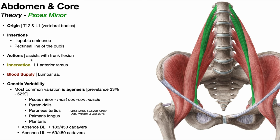The psoas minor assists with trunk flexion. The prime mover of trunk flexion is the rectus abdominis, which we discussed when covering the muscles of the anterior abdominal wall. Comparing how thin the psoas minor is to the size of the rectus abdominis, you could likely surgically remove the psoas minor and still have perfect trunk flexion. This very small muscle likely doesn't contribute much to trunk flexion at all — it's so small it probably only has a proprioceptive function and is not going to produce meaningful force for trunk flexion.